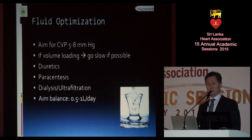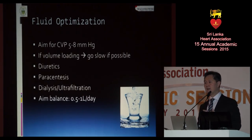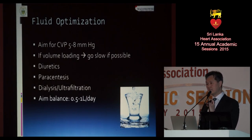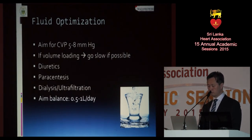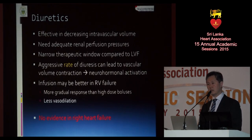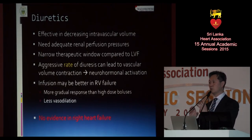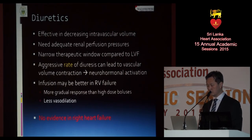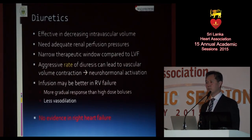For fluid optimization, it used to be said that heart failure patients need higher filling pressures — we now know that's not true. Aiming for CVP of 5 to 8 provides plenty of preload to the left side. Volume loading must be done very slowly, because if you go too fast, the RV can decompensate. Diuretics are used because they work, but they can cause neurohormonal activation — importantly, it's the rate of diuresis, not overall diuresis, that matters. If you take fluid out too fast, intravascular volume contracts and causes neurohormonal activation. Infusion data from the DOSE study suggests it may not work as well generally, but in the RV population it may be slightly better.